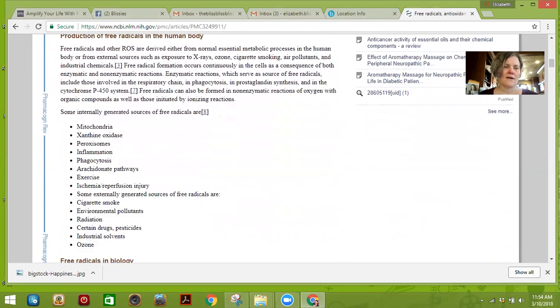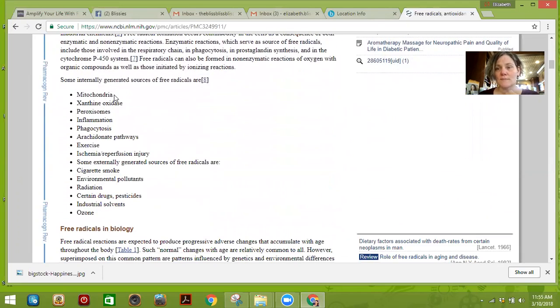Our cells can produce them. Mitochondria can produce them under certain conditions. Inflammation produces that, exercise produces that. But also things like cigarette smoke, environmental pollutants, radiation, certain drugs and pesticides, and industrial solvents. These are things that create dis-ease and stress in the body. These free radicals form and interact with us, and then we need something like an antioxidant to support our body to get better.